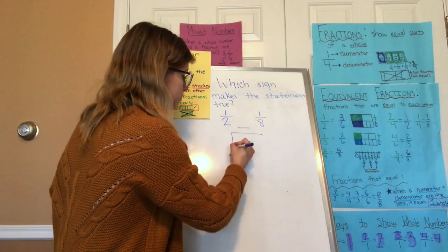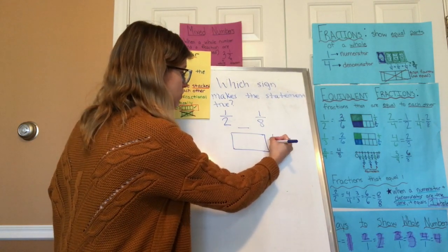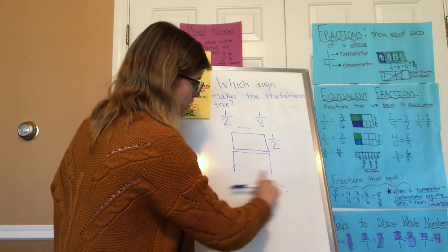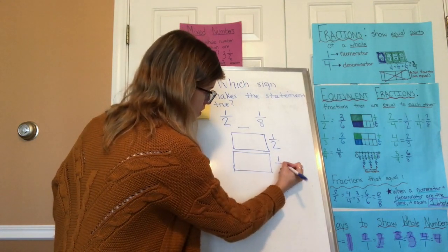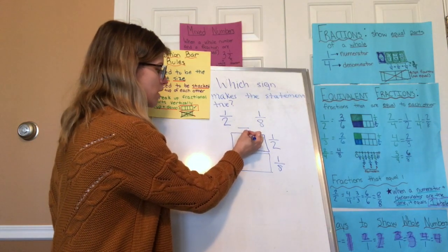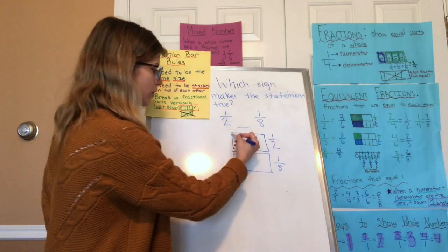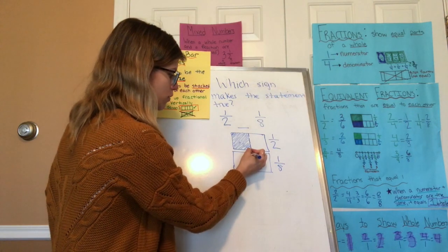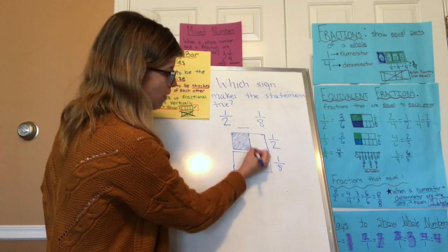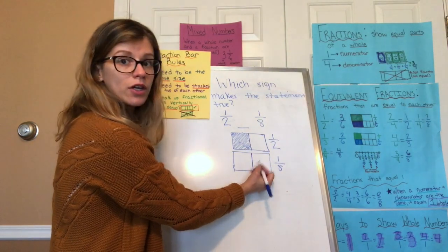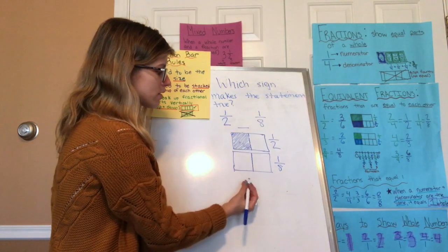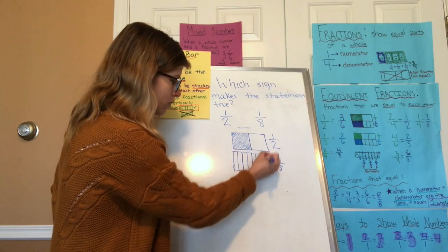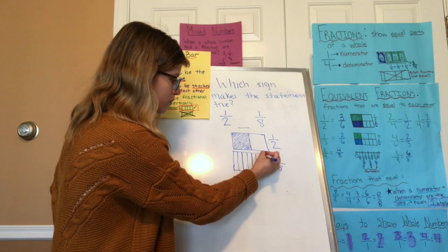I'm making one fraction bar for 1/2 and another for 1/8. For 1/2, I break the fraction bar in the middle and shade in one piece. For 1/8, I also break it in the middle — matching the same line as above — then put two parts in each half to make four, and then two in each to make eight parts, shading in one.